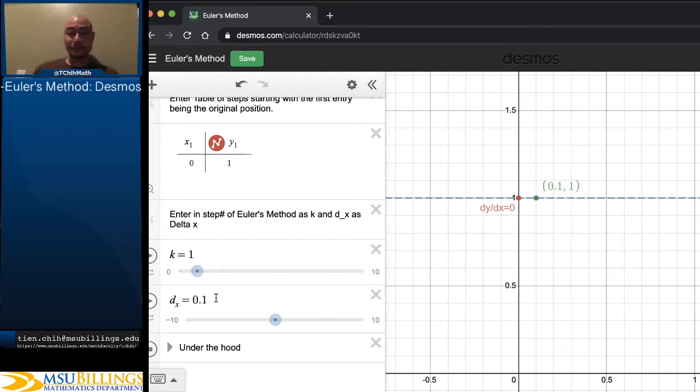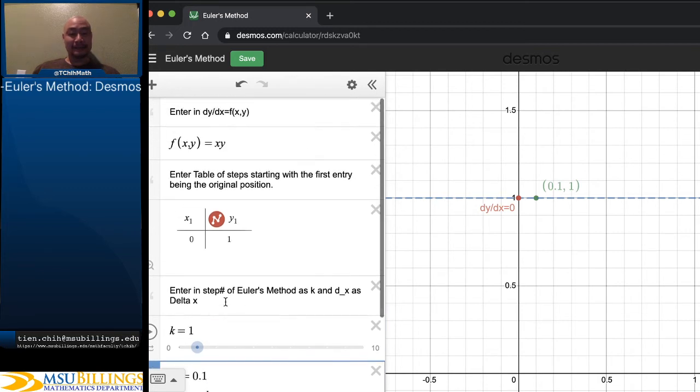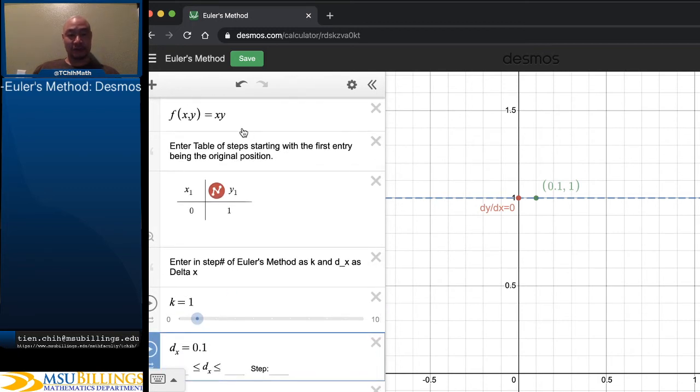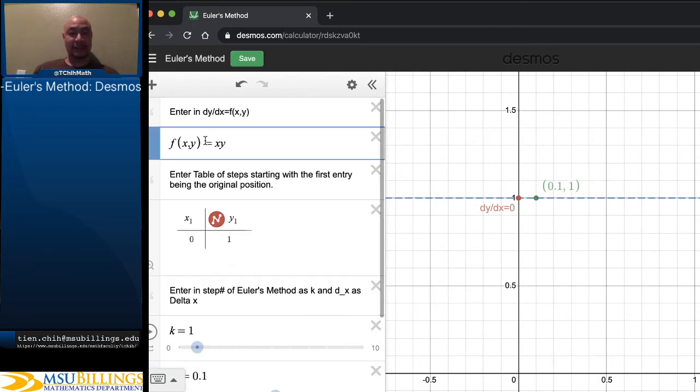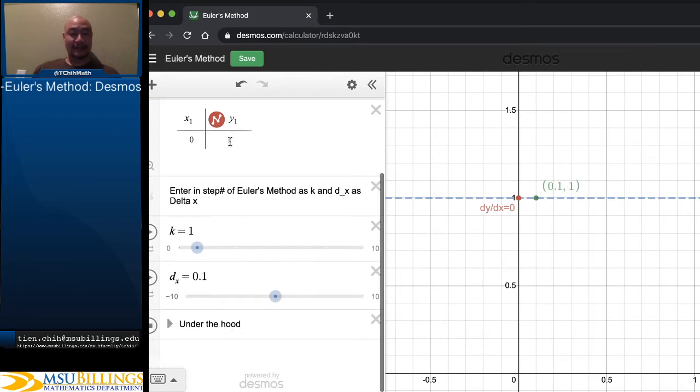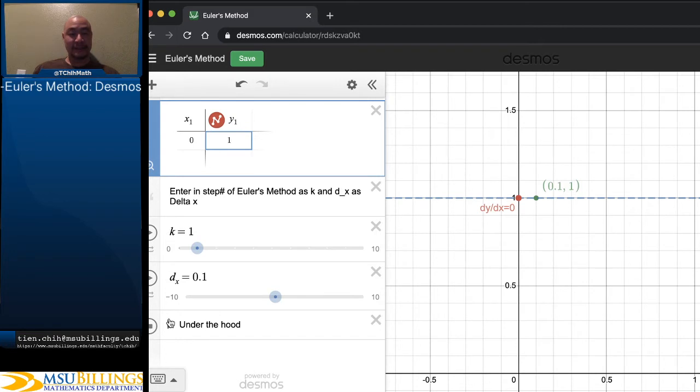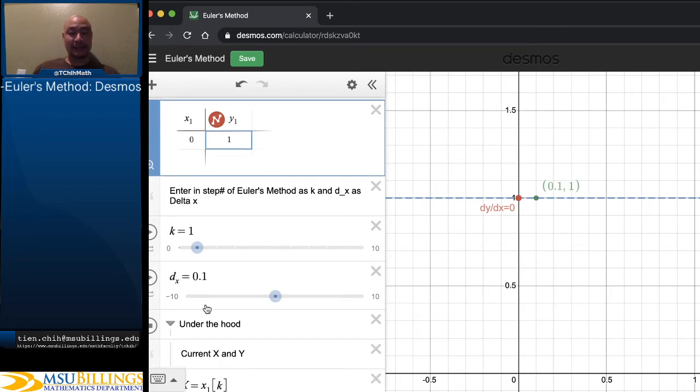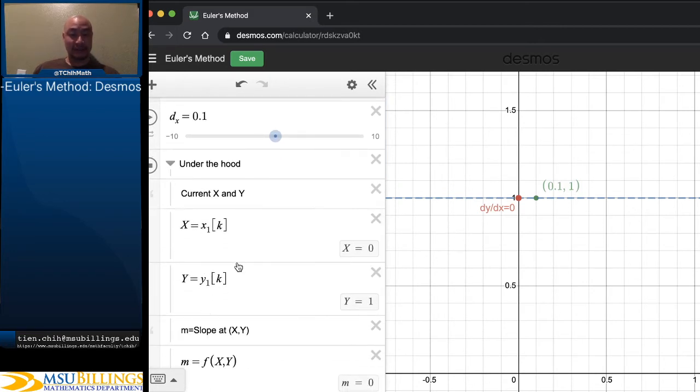And so this is just an example. Of course, whatever you're doing in Euler's method, your dy/dx could be different, your delta x could be different, your initial values could be different. But let's just go take a look at what's underneath the hood here.